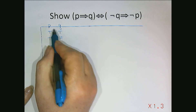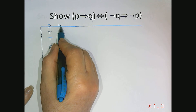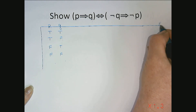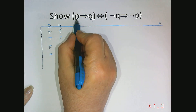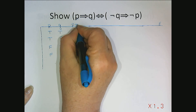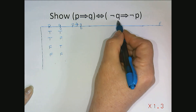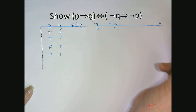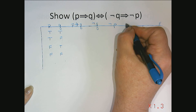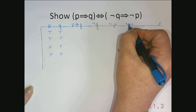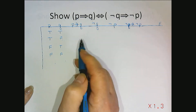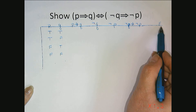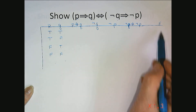The first column indicates the basic component p, the next basic component q. Now I'm going to create columns that help me describe the truth value of the expression by looking at sub-components at a time. I'm going to need to look at p implies q, then not q, then not p, then not q implying not p, and finally compare p implies q with not q implies not p to check if it's a tautology.